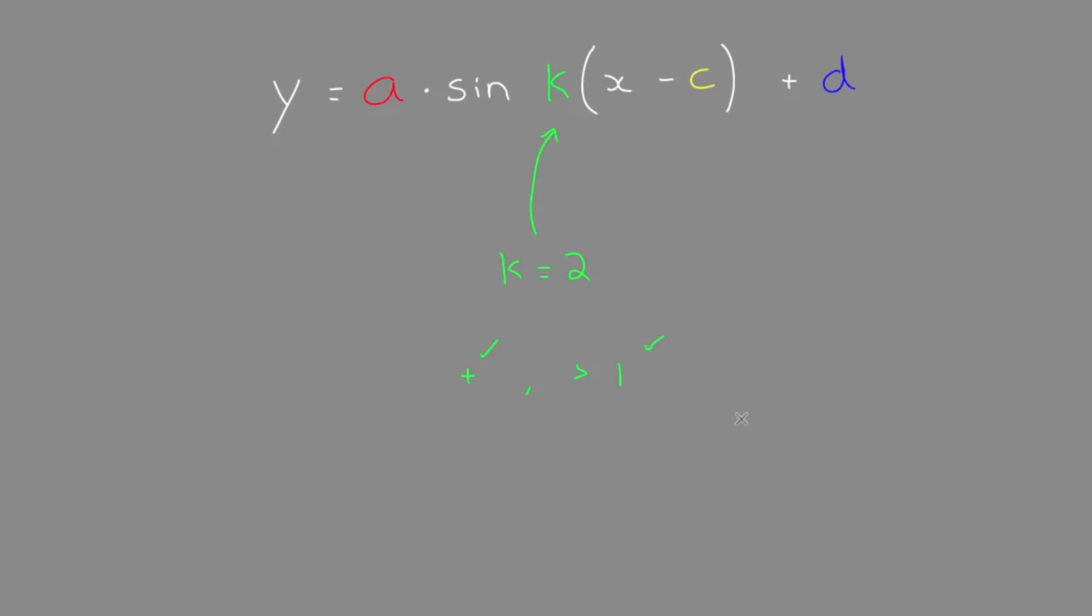Greater than 1 is actually a little bit tricky. What do we do when it's greater than 1? When it's greater than 1, we have a horizontal compression.